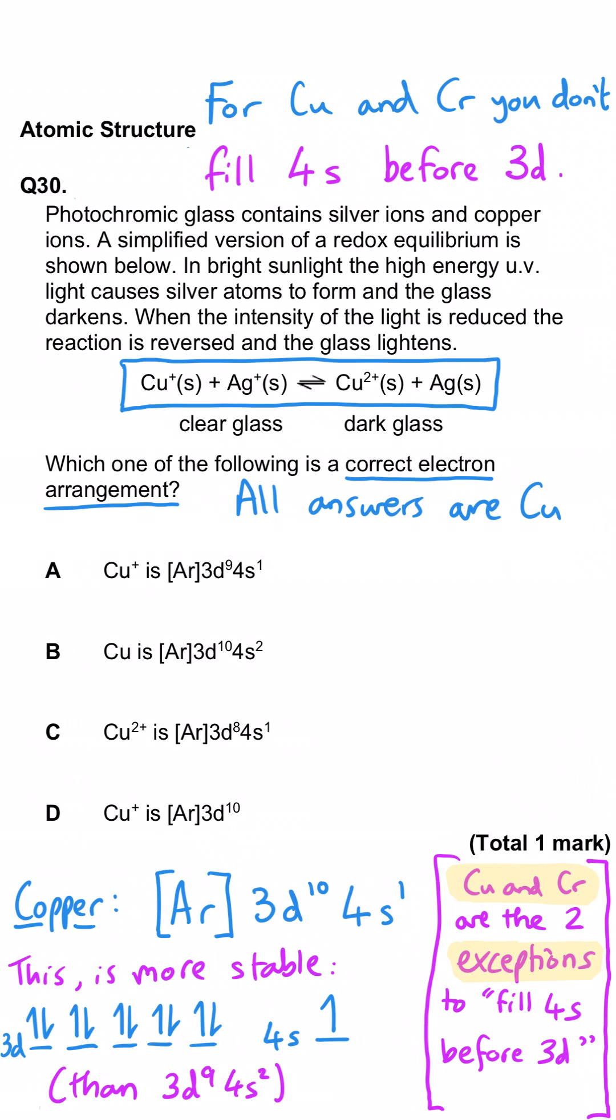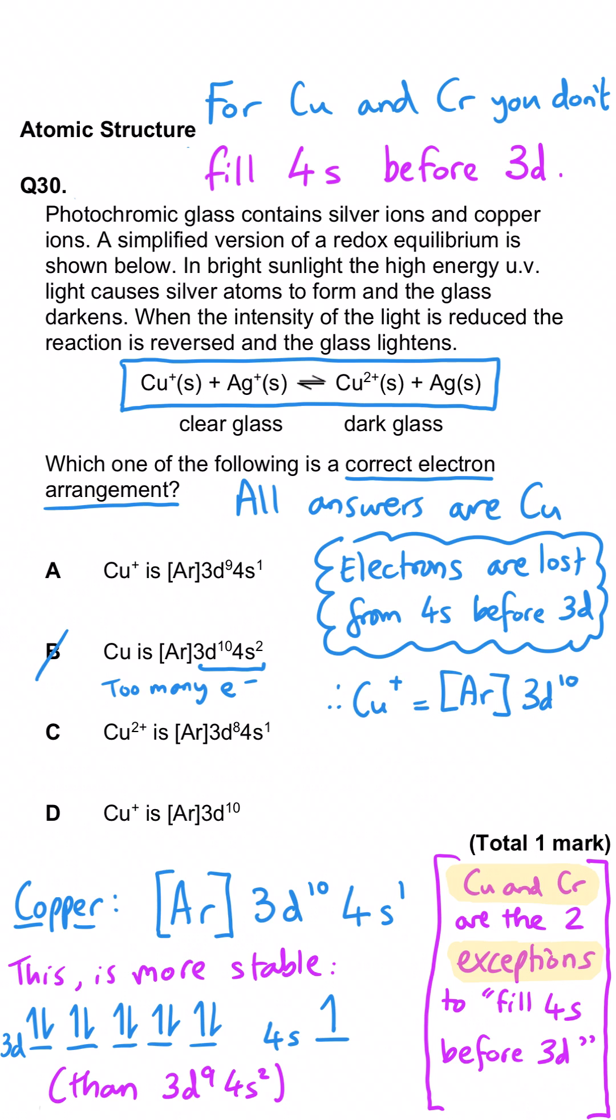It will be 3D104S1 as its ground state because we fill the 3D before the 4S and so that means we can rule out B because it's got too many electrons and then you need to remember that you lose electrons from the 4S subshell before the 3D so if we only lost one electron copper one plus would be 3D10 so that means that D is the correct answer and we can rule out A. If we were to remove a second electron the electron configuration would be 3D9 so C is wrong.